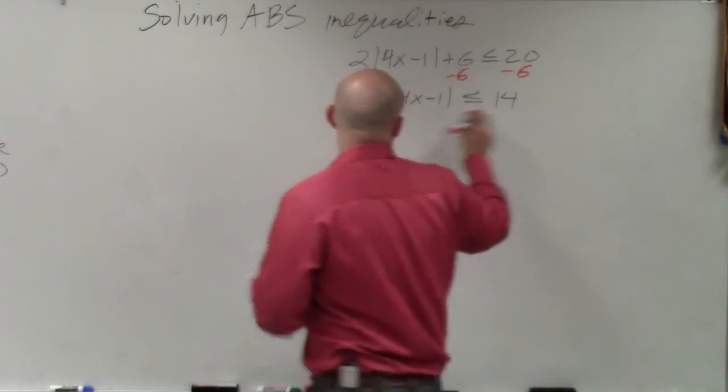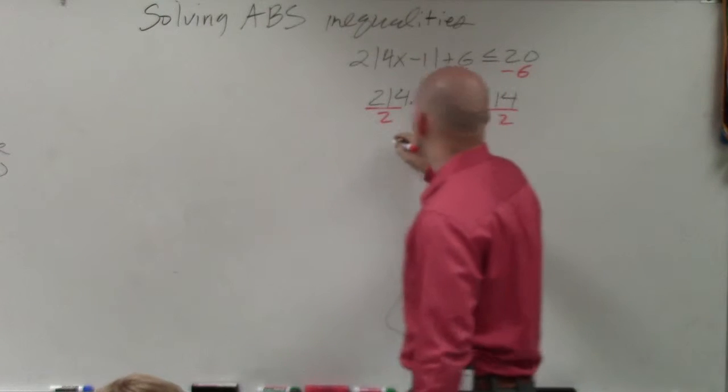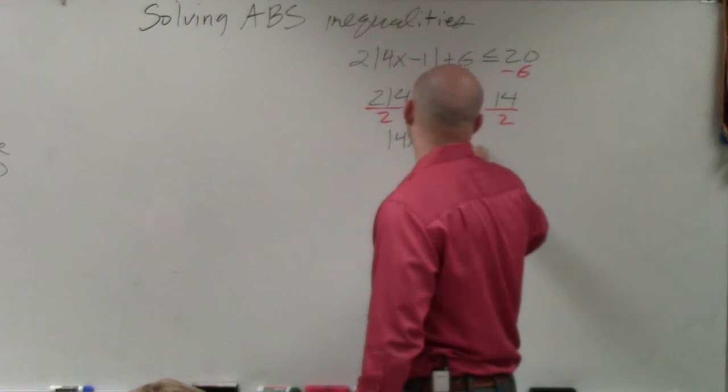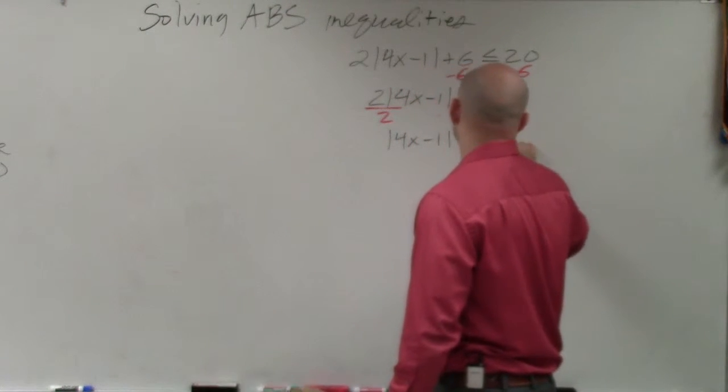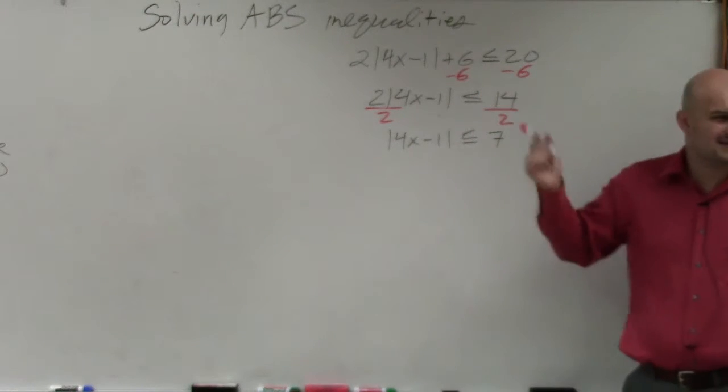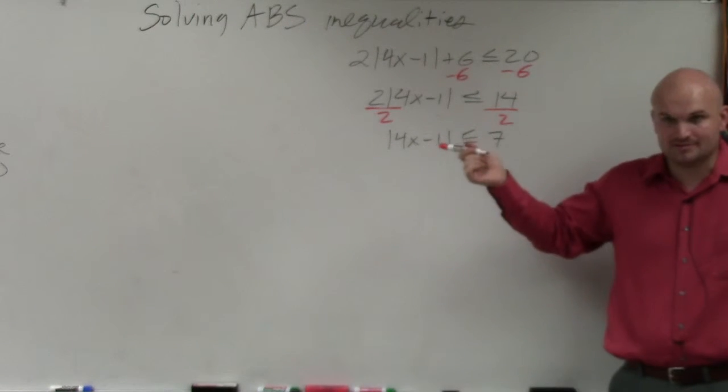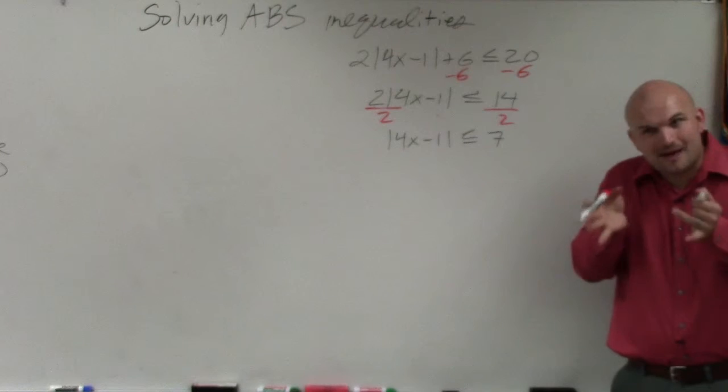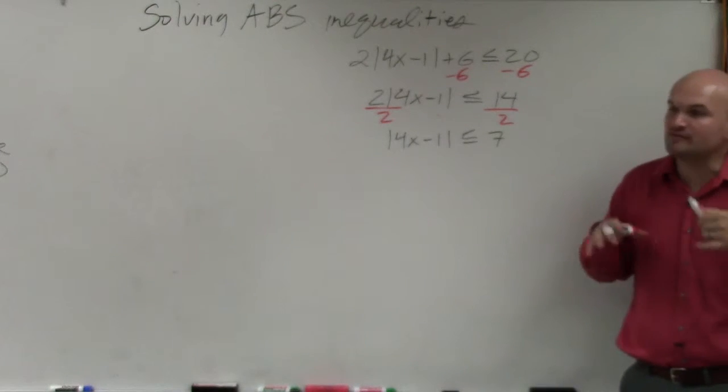Then I divide by 2. So I have absolute value of 4x minus 1 is less than or equal to 7. Did you guys see how step number 1 worked? Treat that absolute value like it's a variable. Just undo everything that's happening to it.